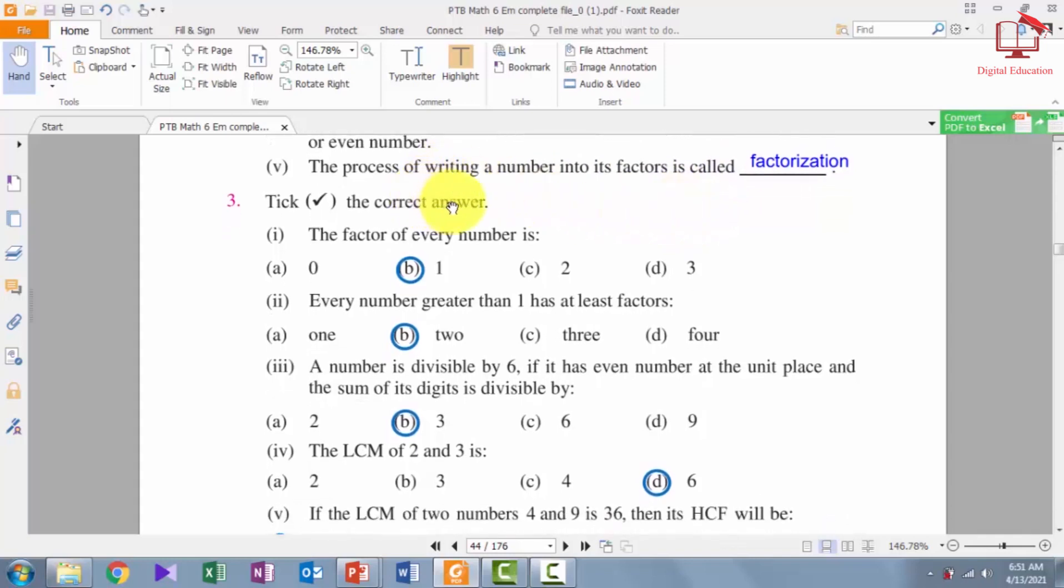Tick the correct answer. Number 1. The factor of every number is... The right answer is 1. Number 2. Every number greater than 1 has at least 2 factors. Right answer is 2.